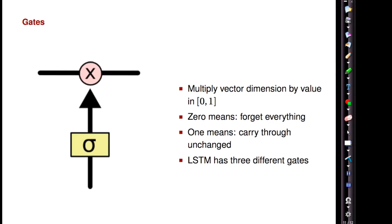A gate takes its vector input and then multiplies. A zero means forget everything. A one means carry through unchanged.